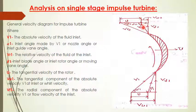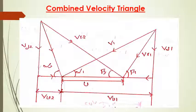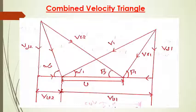For outlet, the same terms apply but at outlet. For example, V1 is the absolute velocity of steam at inlet, and similarly V2 is the absolute velocity of steam at outlet. Here I have combined both the inlet and outlet velocity triangles into a combined velocity triangle, which is very useful to solve problems. For every problem we will try to draw this combined velocity triangle.